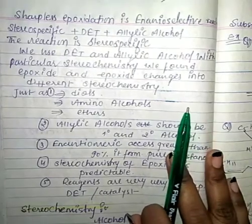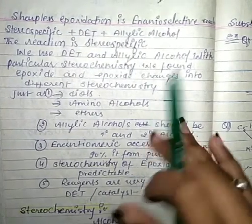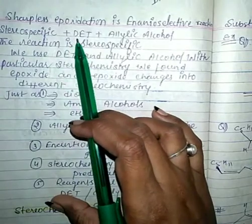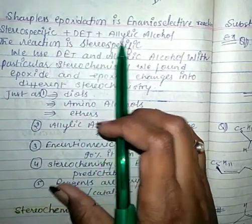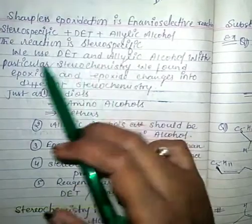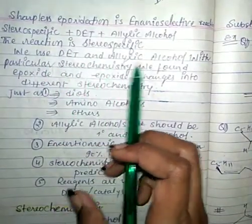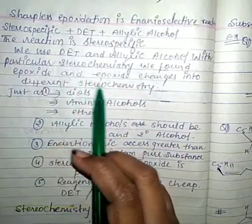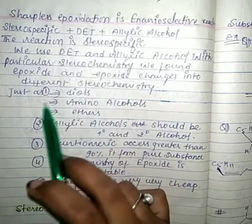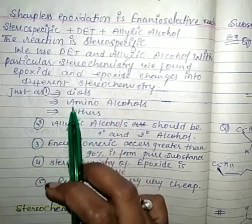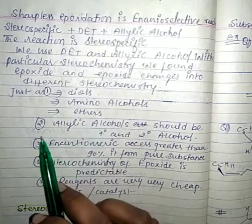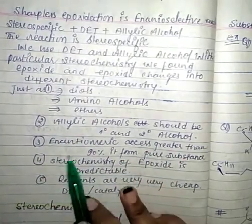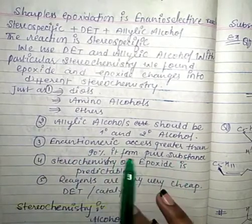Sharpless epoxidation is an enantioselective and stereospecific reaction. Using (+)-DET or (-)-DET with allylic alcohol of particular stereochemistry, we find epoxidation occurring with specific facial selectivity. The epoxide can be converted into different stereochemical products such as diols, amino alcohols, and ethers. The allylic alcohol should be primary or secondary.